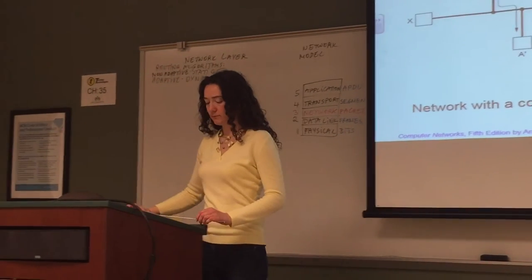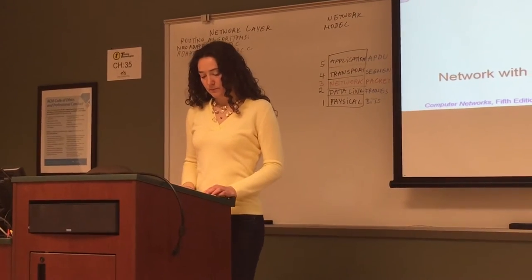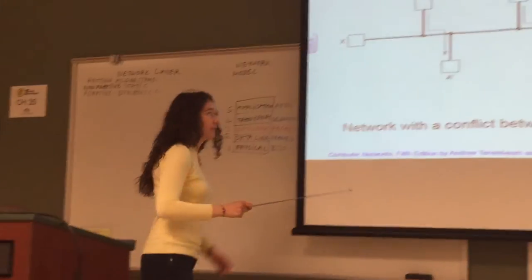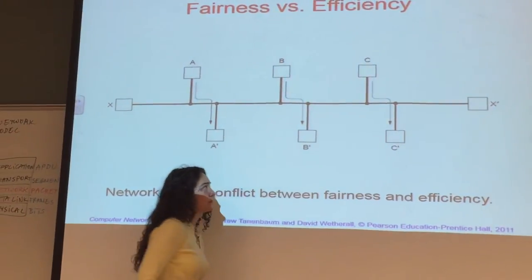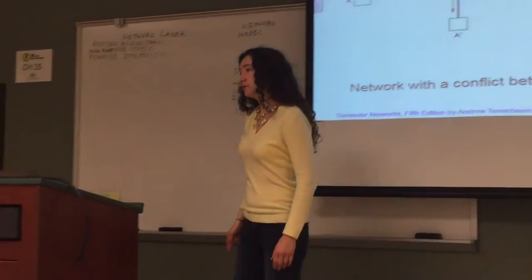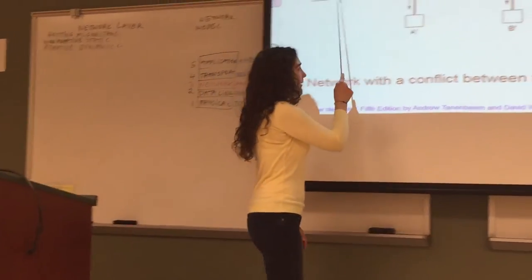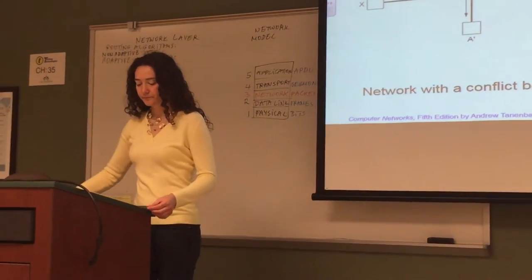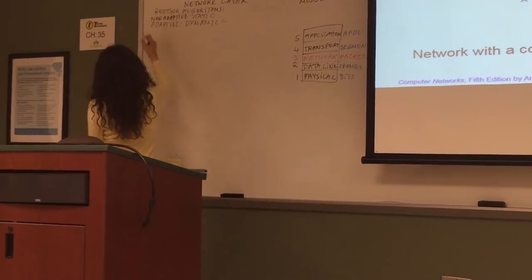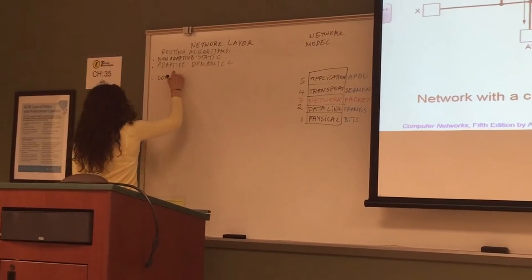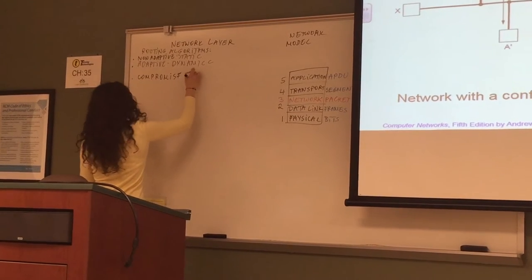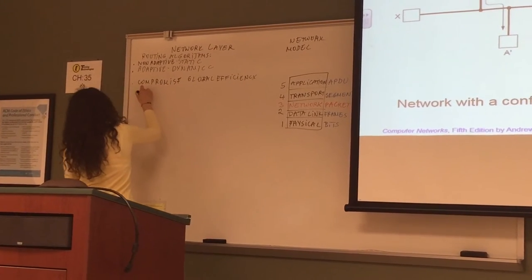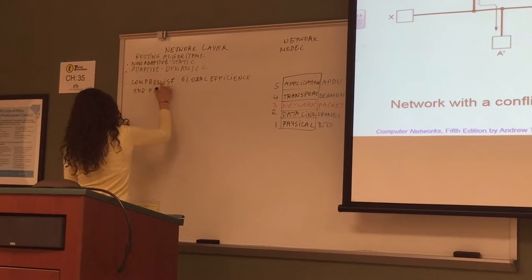If we want to be efficient and maximize the total flow, we pretty much need to shut off the flow from X to X'. Now, that is not fair to the flow from X to X'. These are two contradictory goals, so some compromise is needed between global efficiency and fairness to individual connections.